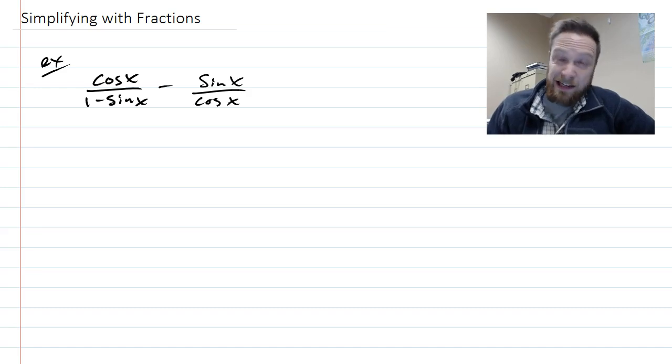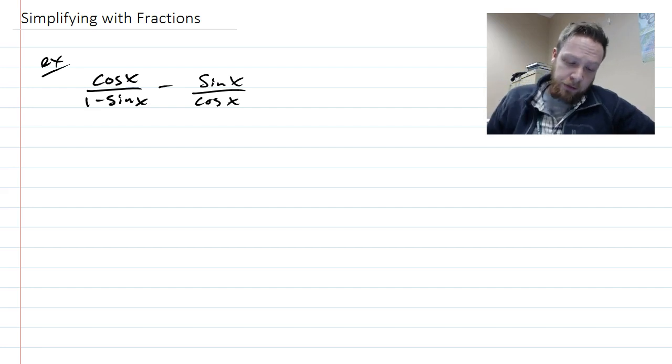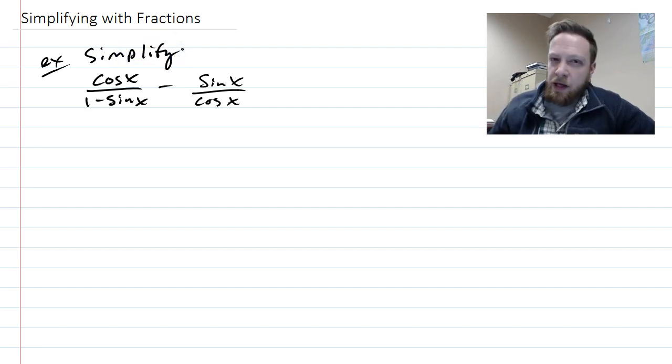In the beginning it's not really called identities, it's just called simplifying. Because they'll give you an expression like this, and they will just say simplify. We don't have any end point in mind, we just have to get it as simple as we can. We want to get rid of as many things and write it, if we can, as just one trig function.